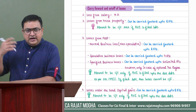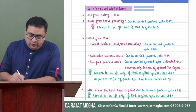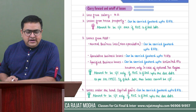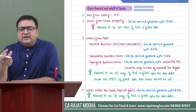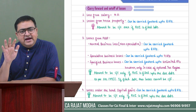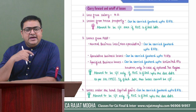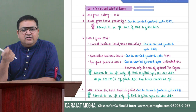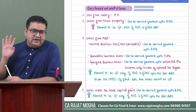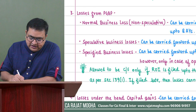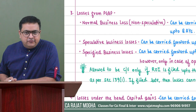For salary, no question of losses arises. For house property losses: if it could not be set off in the same year, it can be carried forward. The maximum period is eight assessment years. For PGBP losses: speculative business losses can be carried forward for a maximum of four years. Specified business losses can be carried forward for an unlimited period of time.